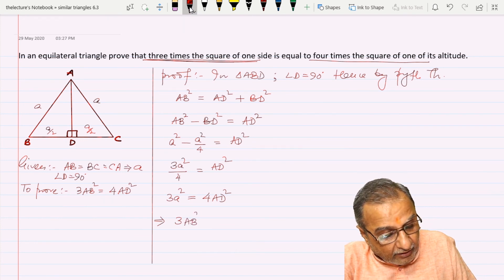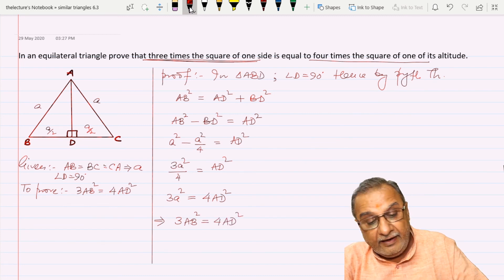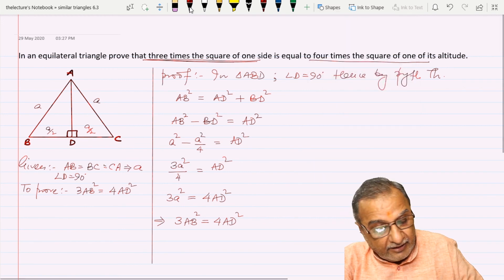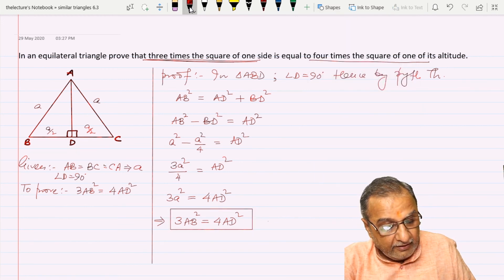So 3AB squared equals 4AD squared, which is the final form of the question, and we have proven this properly. Thank you.